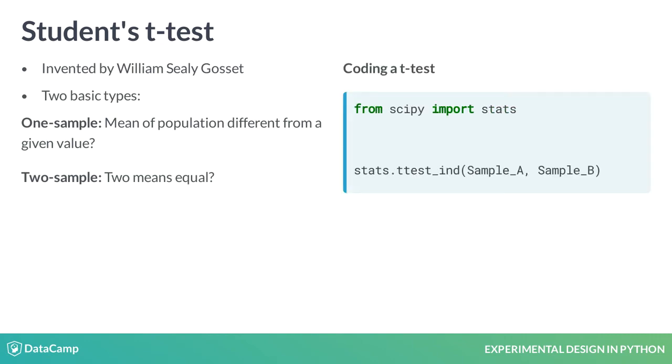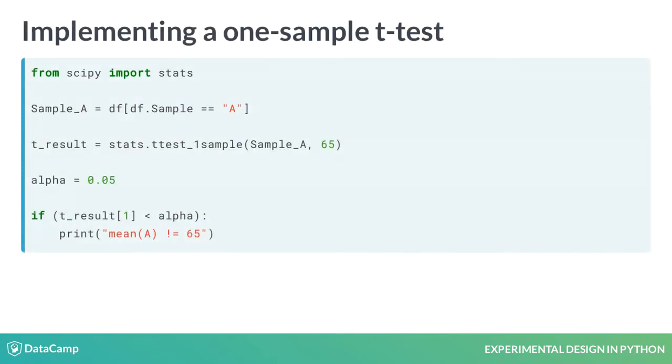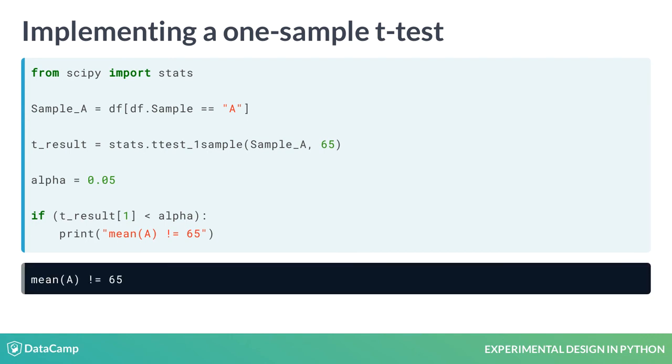For a two-sample t-test, we'll use the function ttest_ind and give it two arrays. This yields an array with the p-value at index 1. For the one-sample t-test, we first import stats. Then we use the ttest_1samp function, which takes two arguments. The first is our sample array taken from our data frame, and the second is a number we want to compare. Finally, using a standard alpha value of 0.05, we test whether our p-value falls under alpha.